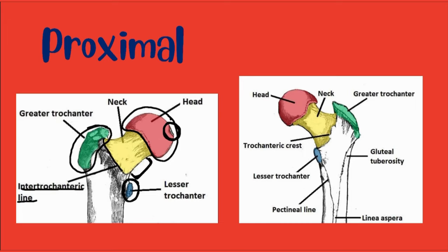The intertrochanteric line is a ridge of bone that runs in the inferomedial direction on the anterior surface of the femur, spanning between the two trochanters. After it passes the lesser trochanter on the posterior surface, it is known as the pectineal line. It is a site of attachment for the iliofemoral ligament, which is the strongest ligament of the hip joint.